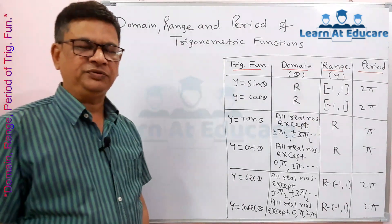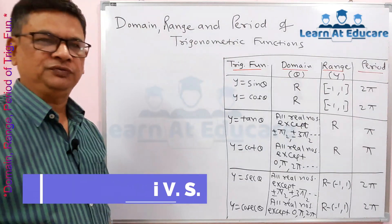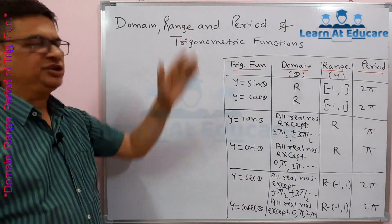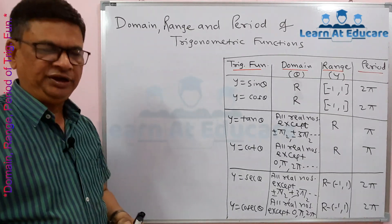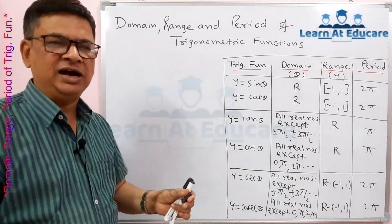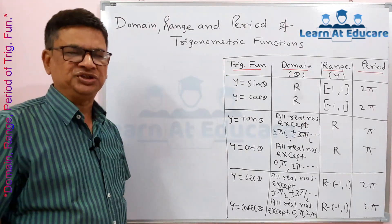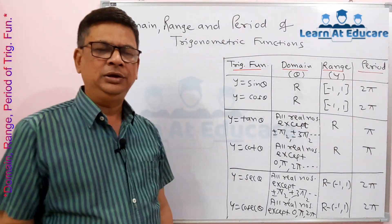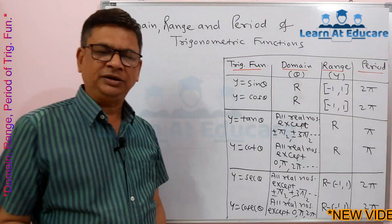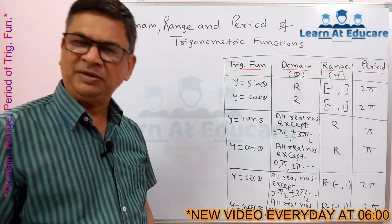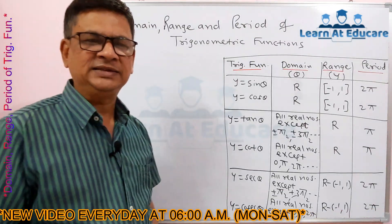Hello students, welcome at Educare. This is Vinod Bihani, and in today's mathematics session we will see about domain, range, and period of trigonometric functions. These three concepts related to trigonometric functions are very important. We already know trigonometric functions — sine θ, cos θ, tan θ, cot θ, sec θ, and cosec θ — can be defined either in terms of a right angle triangle, as in school mathematics, or by using the general method related to the standard unit circle.